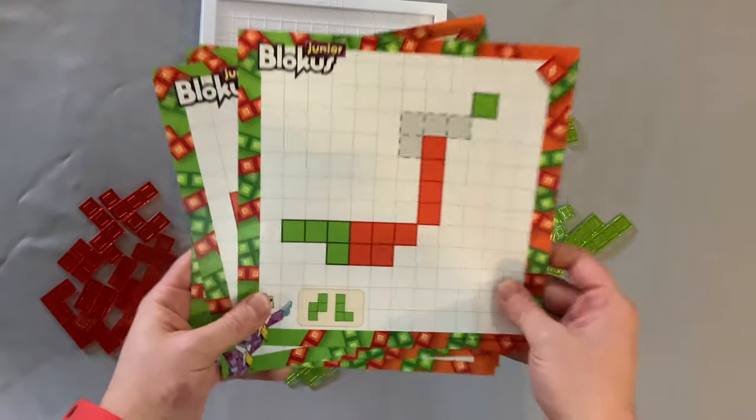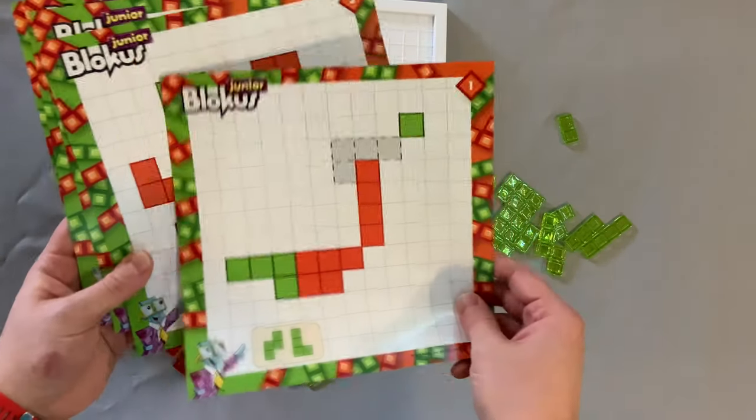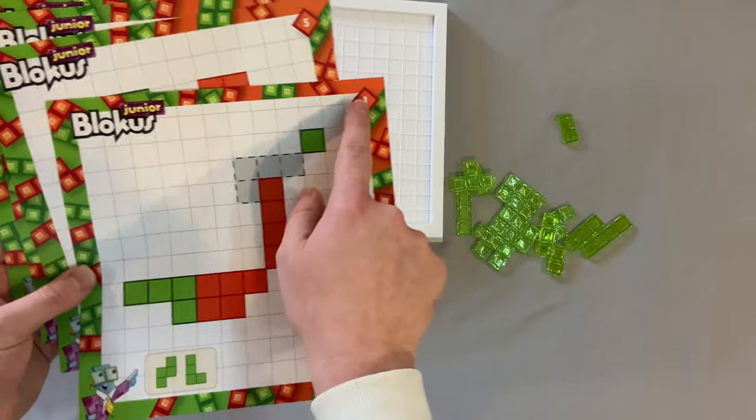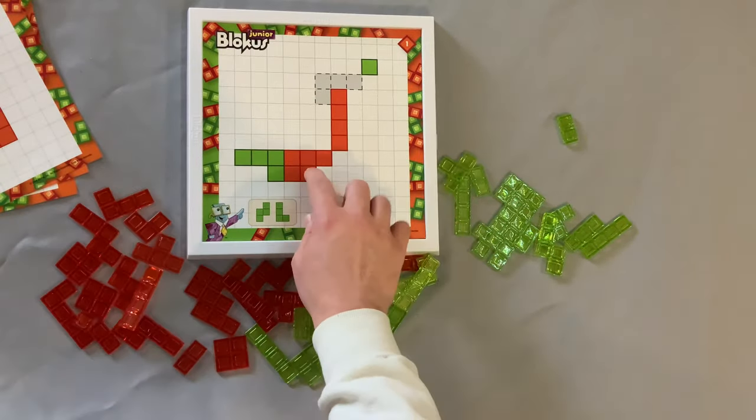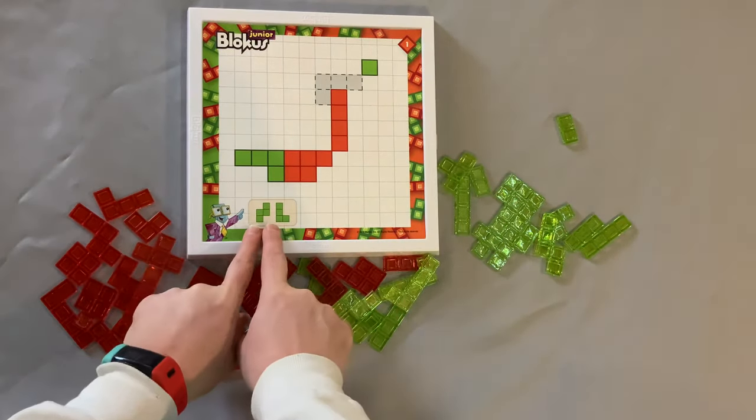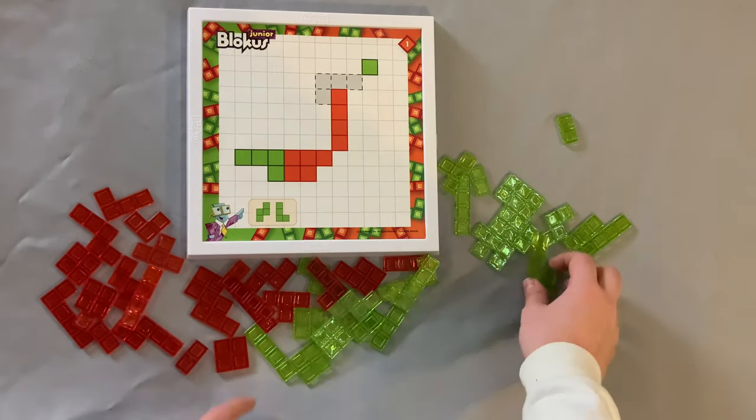So the first thing you're going to want to do is you're going to find the one that has the one on it and you're going to place it right inside of here. Now at the bottom of this green sheet it's going to point out the green pieces that you're going to need to find and place right here.